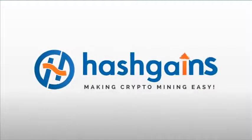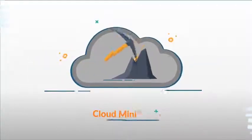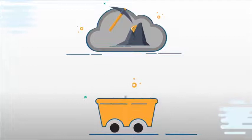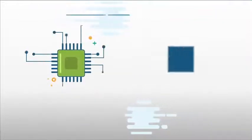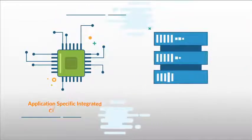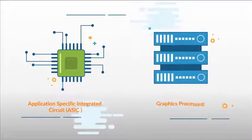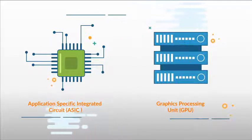With hashgains.com, cloud mining for cryptocurrencies is done on an automated platform for daily payouts with green and secure data centers with high uptimes using the world's most advanced application specific integrated circuit (ASIC) and graphical processing unit (GPU) machines.